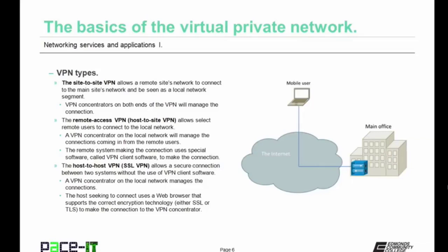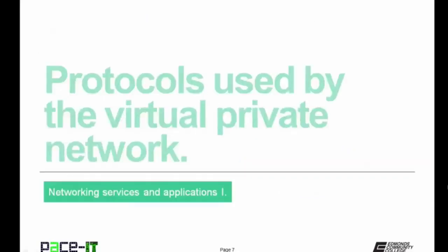The third type of VPN is the host-to-host VPN, often called an SSL VPN. It allows a secure connection between two systems without the use of VPN client software. A VPN concentrator on the local network manages the connection, and the host seeking to connect uses a web browser that supports the correct encryption technology — either SSL or more likely TLS — to make the connection to the VPN concentrator.